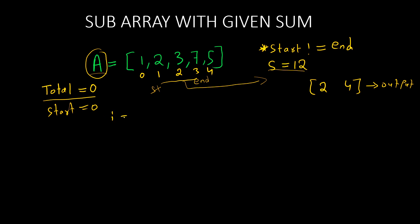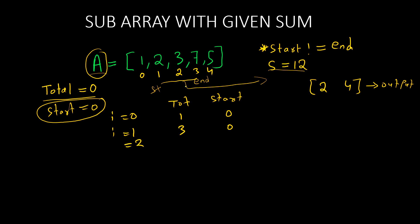Starting the loop: when i equals zero, total becomes one and start remains zero. At i equals one, total becomes three; the starting point won't change — it only updates when total is greater than S. At i equals two, total becomes six (one plus two plus three). At index three, six plus seven gives us thirteen. Whenever total exceeds S, we must subtract elements from the left to bring total back to smaller than or equal to S.